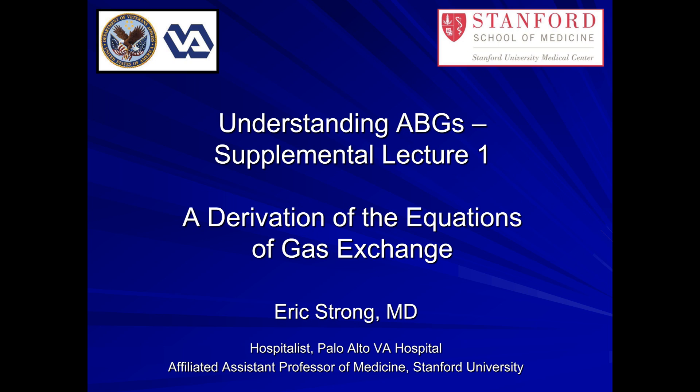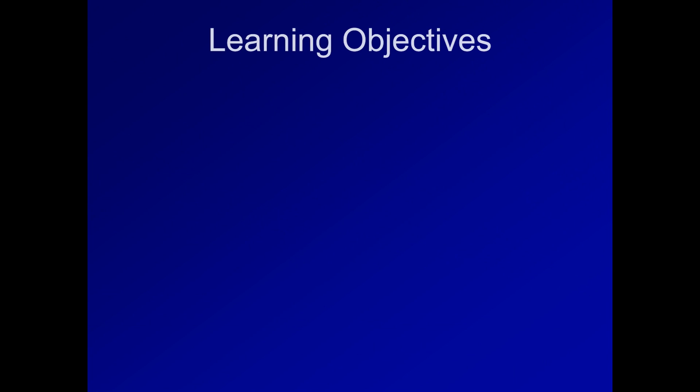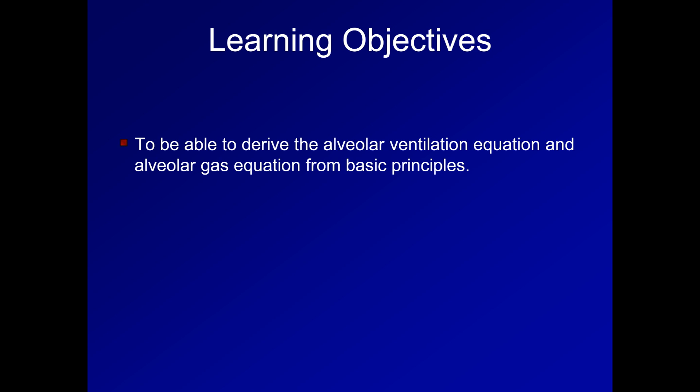Hello, this is the first of several supplemental lectures to this course on Understanding ABGs. These supplemental lectures are going to focus on topics that are not essential for common ABG interpretations per se, but which may simply be of interest to people who have already shown interest in abnormalities of acid-base balance or gas exchange. As you can see, the specific topic of this lecture is the derivations of the equations of gas exchange. The learning objectives of this lecture are to be able to derive the alveolar ventilation and alveolar gas equations from basic principles, and to be aware of some of the alternative forms of the alveolar gas equation.